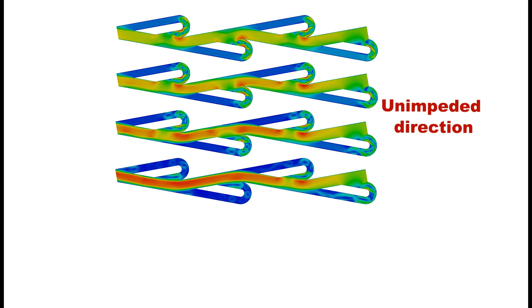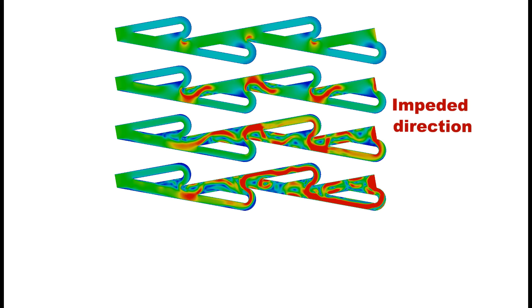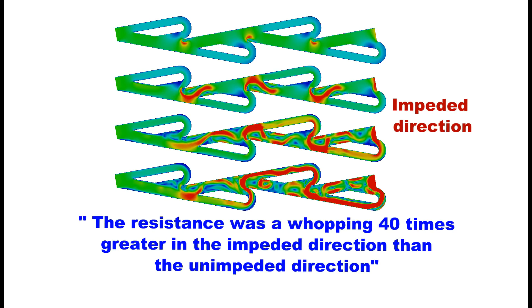Here are Nathan's results. The bulk of the fluid is able to follow a wide and mostly laminar flow, and thus the only losses are due to surface friction. The resistance was a whopping 40 times greater in the impeded direction than in the unimpeded direction.